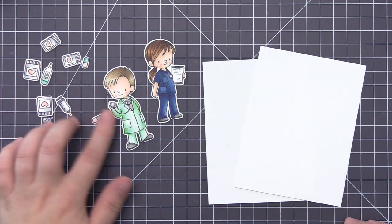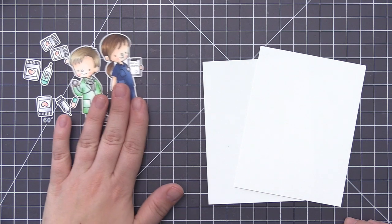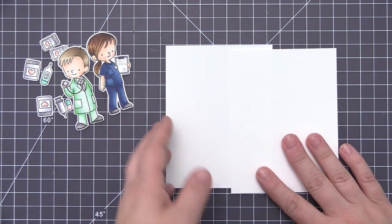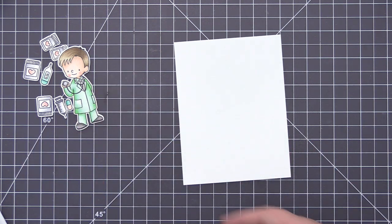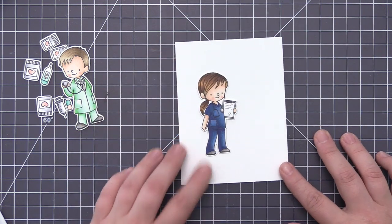Now you can see I have my images colored and cut out, and I did stamp some additional pill bottles and some little pills in case I wanted to use them on both of the cards. So I have all of my images ready to go. Now we just need to create the background panel that we're going to put them on.